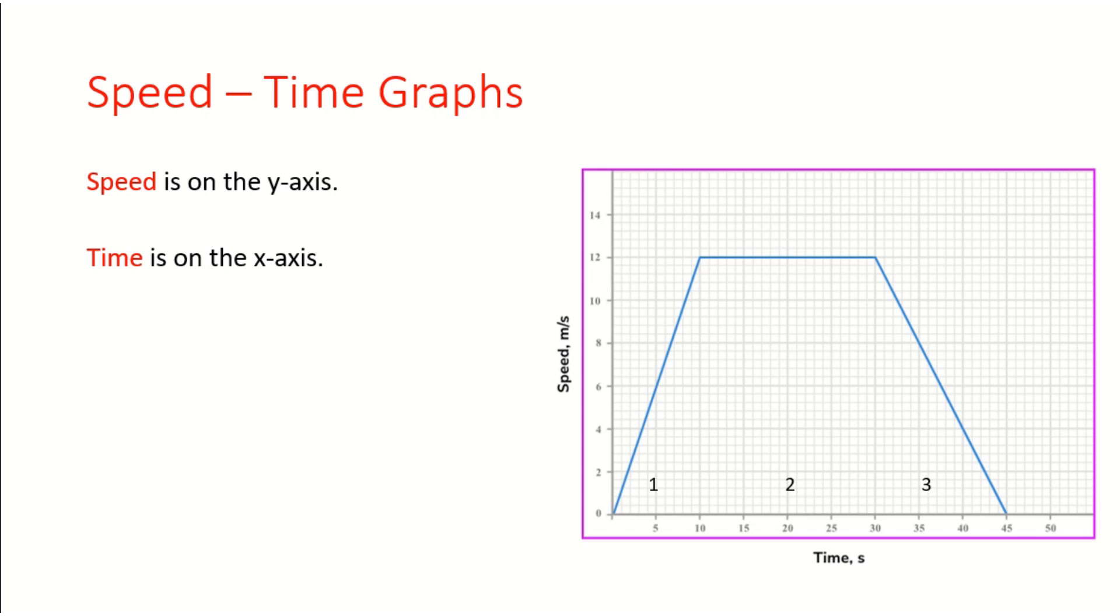Now, the key point about speed time graphs is that it allows us to calculate something called the acceleration. The acceleration tells us how quickly something is speeding up. And you can see that in section one on the graph, the speed is increasing. And that would be an example of accelerated motion. When we have a speed time graph, we learn the acceleration through the gradient. Or in other words, the slope. The greater the slope, the greater the acceleration of the object.